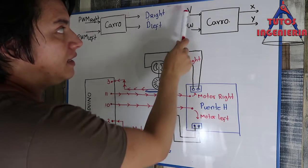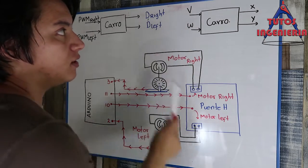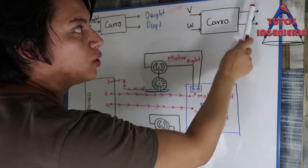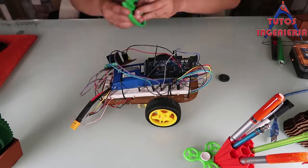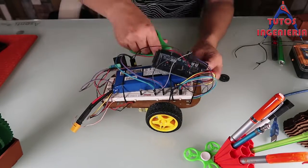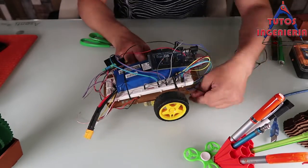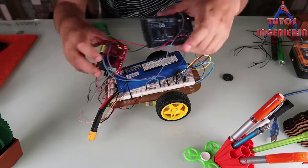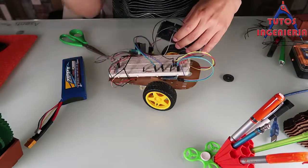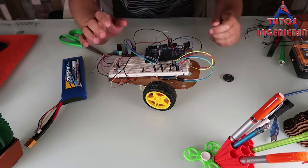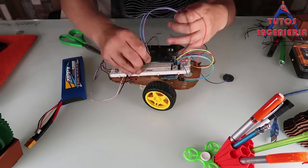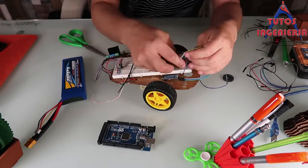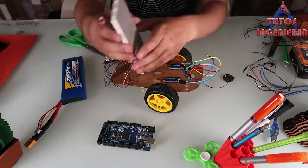Hi everybody. In this video we are going to see the last theoretical part — we will try to understand the feedback concept, the importance of the subject in control theory, and then we will be ready to begin the building of our car.